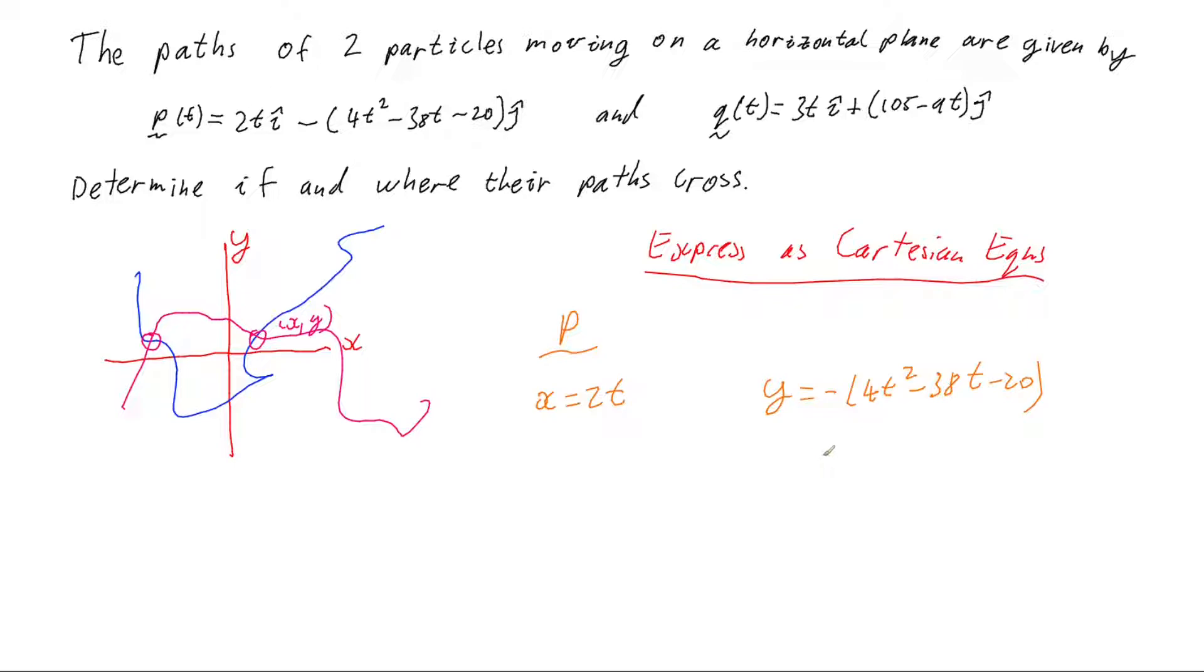So what we want to do is rearrange one of these to make t the subject of the equation and substitute it into the other. The easiest to do is the equation for x because we can simply say that x divided by 2 is t.